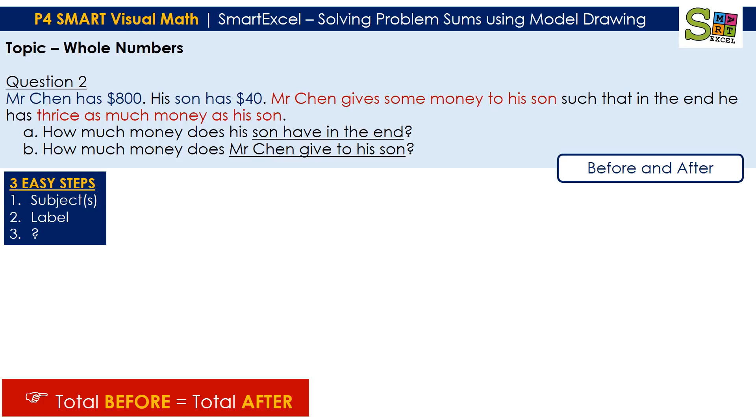Mr. Chen has $800, his son has $40. Mr. Chen gives some money to his son such that in the end he has three times as much money as his son. So how much money does his son have in the end? That's the A question. Your B question will be, how much money does Mr. Chen give to his son?